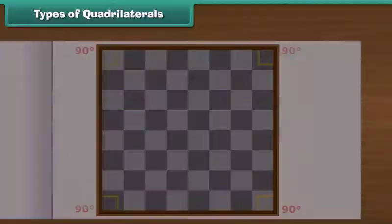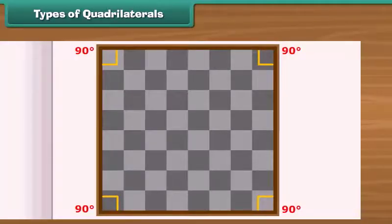A square is a parallelogram in which all angles are right angles and all sides have same length. Hey friends, do you enjoy playing chess? Look at the chessboard. It is square in shape.